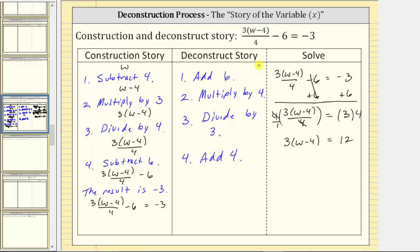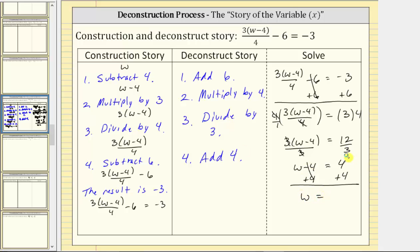The third step in the deconstruct story is divide by three. We divide both sides of the equation by three. Simplifying on the left, three divided by three is one, so one times the quantity w minus four gives us w minus four. On the right, 12 divided by three is four. The last step to solve for w is to add four to both sides. Simplifying, minus four plus four equals zero, so the left side is just w. On the right, four plus four is eight. The solution to the equation is w equals eight.